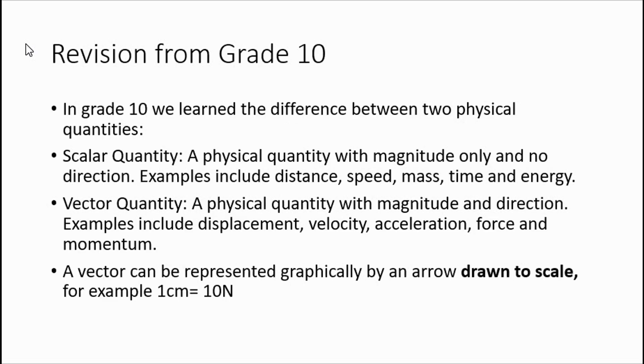Let's just do a little bit of revision from grade 10. So in grade 10, what did we learn? We learned the two physical quantities that we deal with in physics. The first one, the scalar quantity which only has a size or magnitude, and then we also looked at a vector quantity which is a physical quantity that has size or magnitude and a direction.